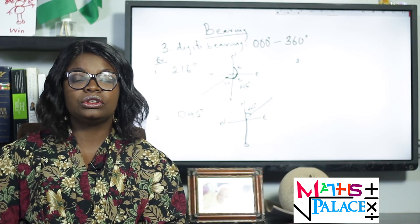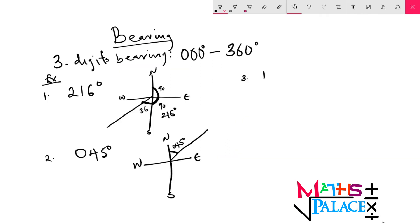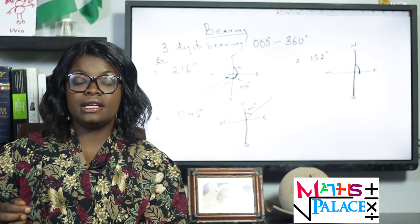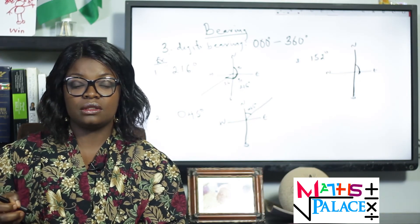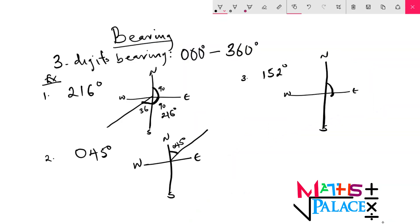Another example of three-digit bearing is 152 degrees. Taking our bearing from the north, we move from north to east — that is 90 degrees. Then from east to south, another 90 degrees, making 180 degrees. But I have 152 degrees here, which is less than 180. So from the 90 already here, what do I need to make up 152? That is 62 degrees. So I have 90 degrees and 62 degrees, making 152 in total.